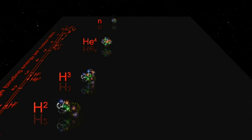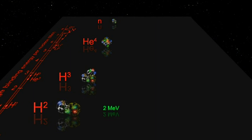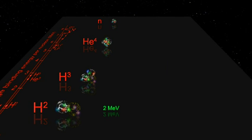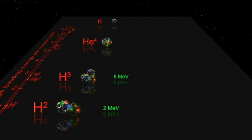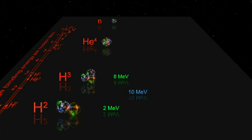The binding energy for deuterium is about 2 MeV, and the binding energy for tritium is about 8 MeV. So the total for the input items is 10 MeV.